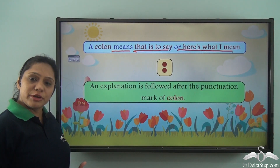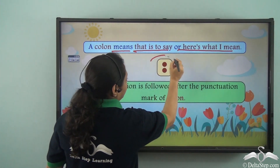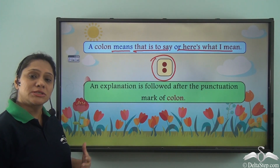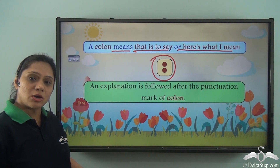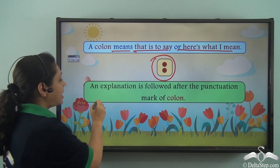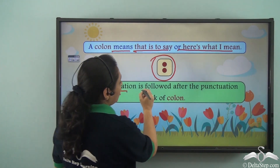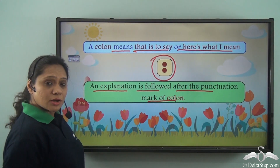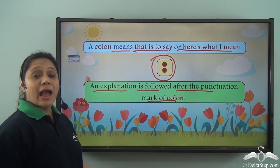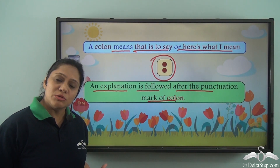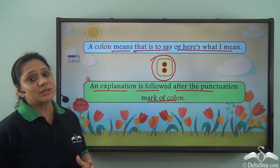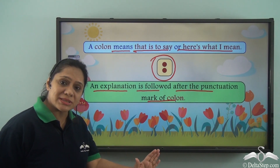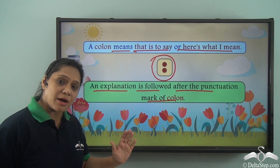A colon is used to introduce a word, a phrase, or an incomplete sentence. We use two circles or two dots on top of each other to form a colon, and an explanation follows after it. Remember that there is no space before the colon, but we always put a space after the colon.